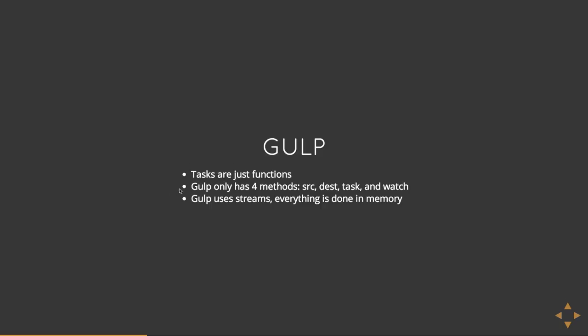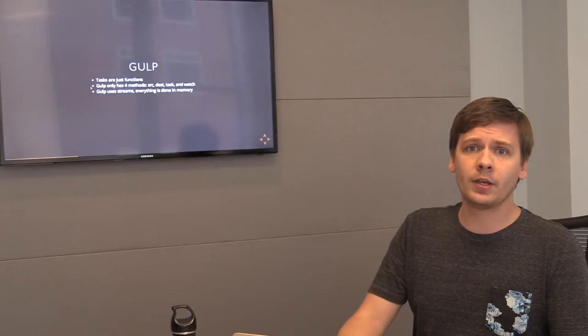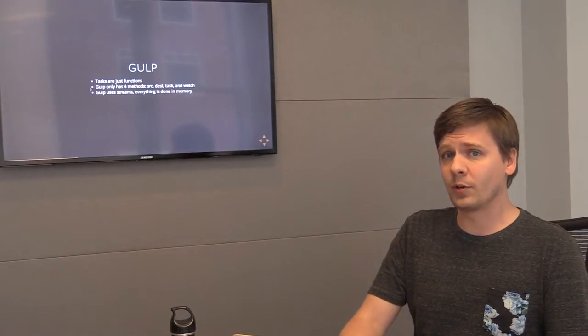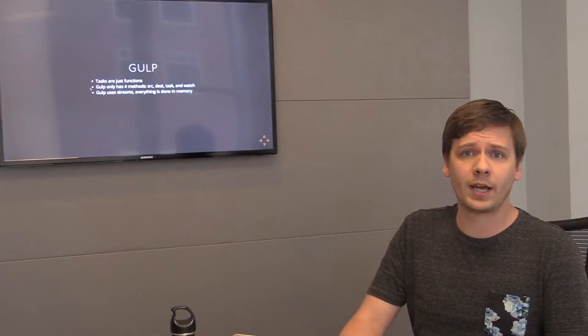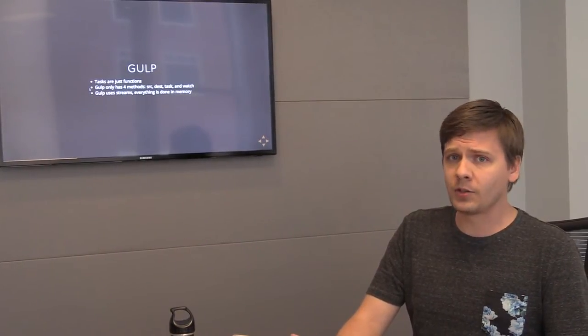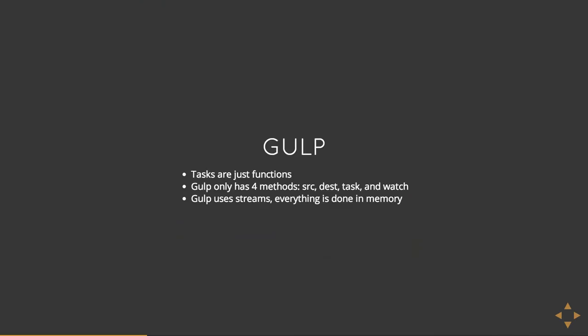Being that it is JavaScript and really simple, there are only four methods you have to worry about: a source method, a destination method, a task, and a watch method. We'll cover all of those in detail. Gulp uses streams, so whenever you want to do a compilation step it's just a stream of that file. Streams are a big Node thing. If you've never used streams, it's really great to work with — it makes the workflow for an asset really clear, very manageable, easy to read, easy to use.